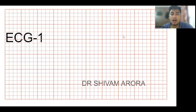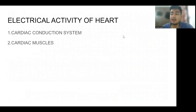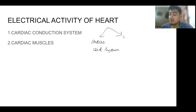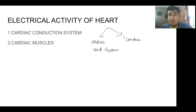Hello everyone. I'll be taking a series of lectures on basics of ECG and this is the first lecture in that series. We'll start with electrical activity of the heart. The heart contains two types of tissues: one is the cardiac conduction system and another is cardiac muscles. The function of the cardiac conduction system is to conduct the electrical impulse from one part to another, while cardiac muscles contract and push the blood.